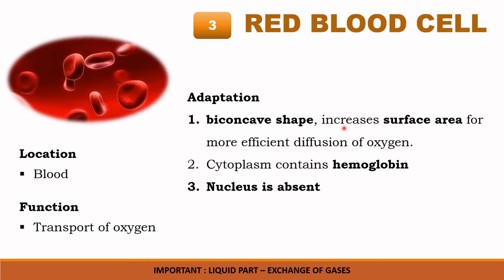Red blood cell adaptation: red blood cells are biconcave in shape, which increases the surface area for more efficient diffusion of oxygen. The red blood cell contains hemoglobin pigment, which is why the cytoplasm is red in color. The nucleus is absent in the red blood cell, which gives more space for hemoglobin to capture oxygen.